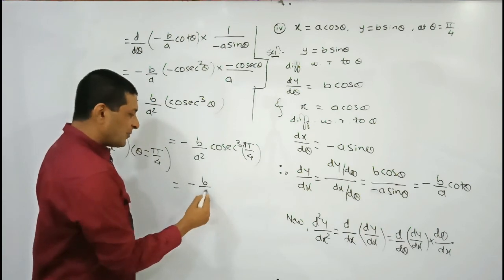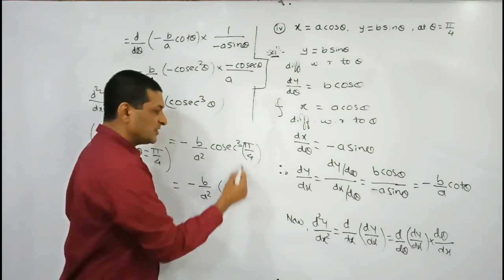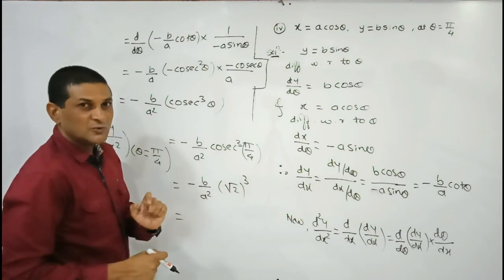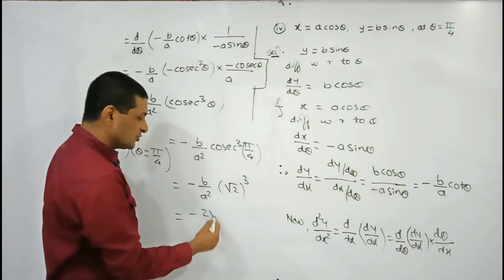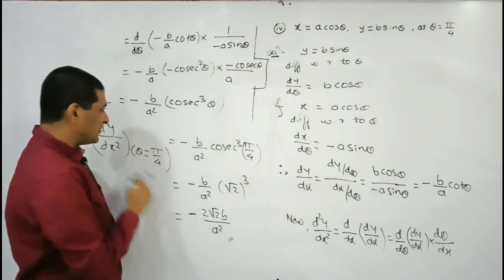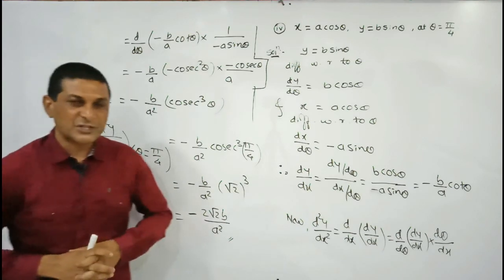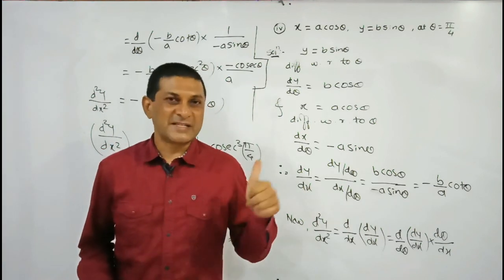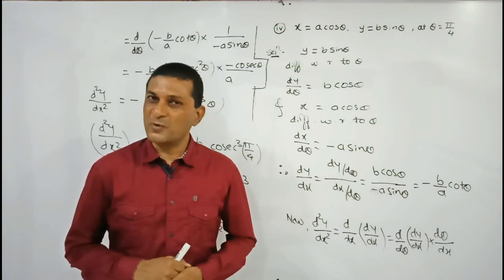At θ = π/4: cosec(π/4) = √2, so cosec³(π/4) = (√2)³ = 2√2. Therefore d²y/dx² at θ = π/4 = -(b/a²) · 2√2 = -2√2·b/a². This is the required value of the second order derivative for example four. In this way we have completed all four examples from question number two. In the next video we are solving question number three.